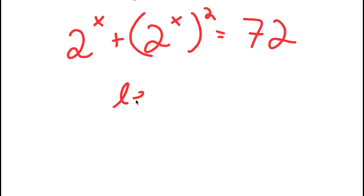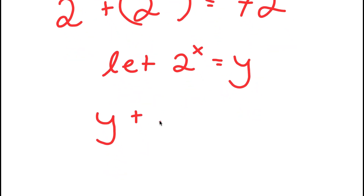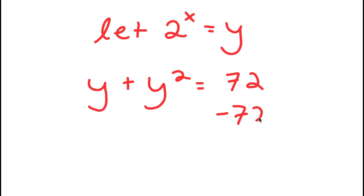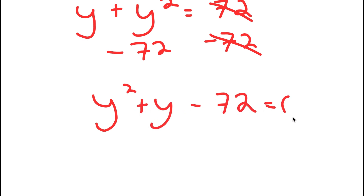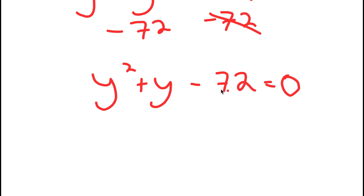From here, I'm going to let 2 to the power of x equal to the variable y. Now I get y plus y squared is equal to 72. If I subtract 72 on both sides and rearrange this, I get y squared plus y minus 72 is equal to 0. This is a quadratic equation, meaning I can solve this using the quadratic formula.